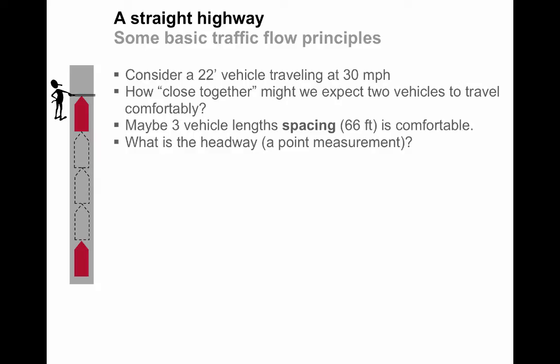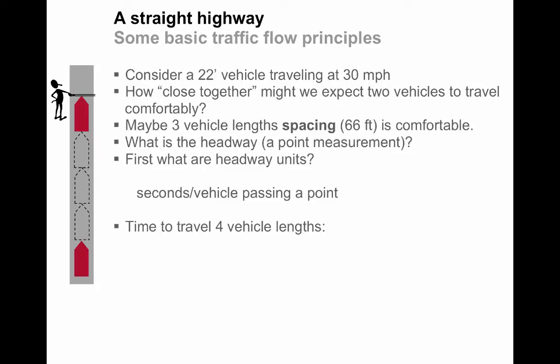Let's think about what this translates to in terms of time. What is the headway, which we know from before is a point measurement? If we forget what the definition of headway is, we just go back to what the units are. We recall that the units for headway are seconds per vehicle passing a point. We can then calculate the headway here, which is the time needed to travel four vehicle lengths. From where the nose of this second vehicle is up to where the nose of the first vehicle is, you can see that's a total of four vehicle lengths. It's the spacing, which is three, plus the length of the first vehicle, which is four.